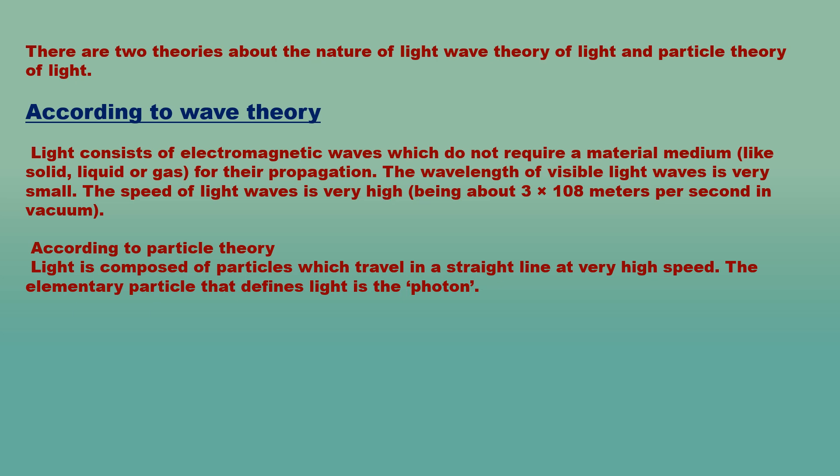Some phenomena of light can be explained only if light is considered to be made up of waves, whereas others can be explained only if light is thought to be made up of particles. For example, the phenomena of diffraction — bending of light around corners of tiny objects — interference and polarization of light can only be explained if light is of wave nature. On the other hand, the phenomena of reflection and refraction of light and casting of shadows can be explained only if light is thought to be made of particles.